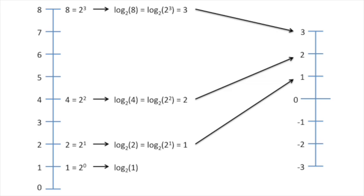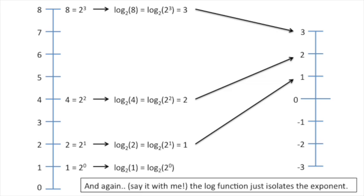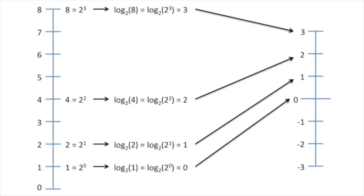Now we take the log base 2 of 1. The log function just isolates the exponent. In this case, the exponent equals 0, so the log base 2 of 1 equals 0. And thus, 0 is the log base 2 equivalent of the number 1.